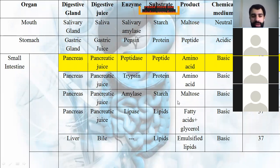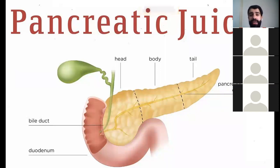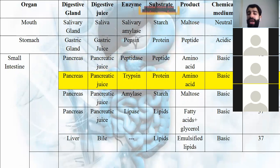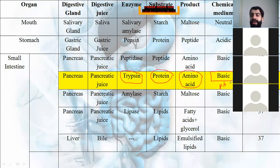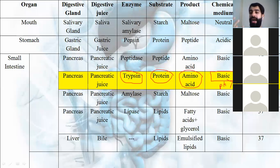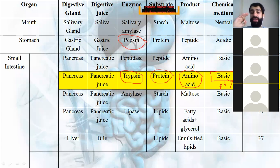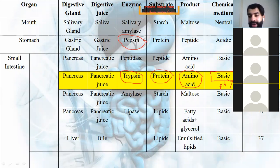The pancreatic juice also contains a second enzyme called trypsin. Trypsin works on protein to give amino acid. The medium is also basic — pH greater than 7 — and temperature is 37 degrees Celsius. Now, which enzyme is stronger: pepsin or trypsin? Justify your answer — a complete answer earns a plus one on the quiz.